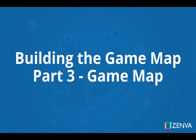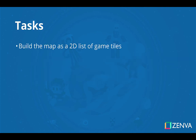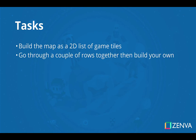Welcome to part 3 of building the game map sub-series. Here we're going to finish this off by constructing our game map from scratch. This will essentially be a bunch of tiles in an 8 by 8 grid format. Our first task is to build the map as a 2D list of game tiles using vectors. We'll need to build up each row of 8 tiles — 8 by 8, that's 64 tiles in total. We'll go through a couple rows together so I'll show you the structure and how to set up these game tiles, then leave you on your own to either follow my structure or build up your own map. By the end we'll run the game to view the complete map. Let's head to the code and get started.